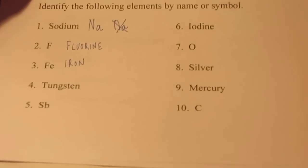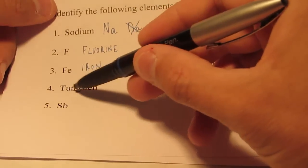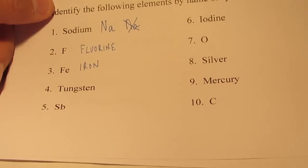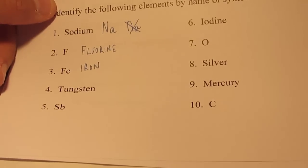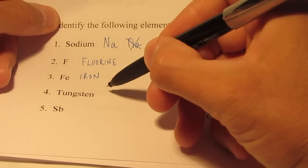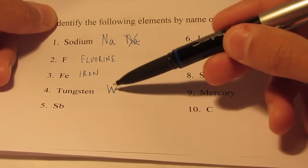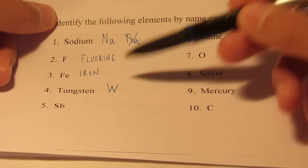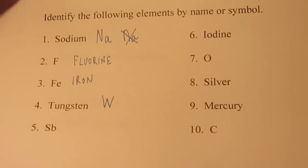Let me do one more. Tungsten — remember the symbol for tungsten? That's another strange one. It's not T, not Tu, not Tn — in fact, there's no T in the symbol at all. It's just the capital letter W. If there's one letter in the symbol, make sure that letter is uppercase.